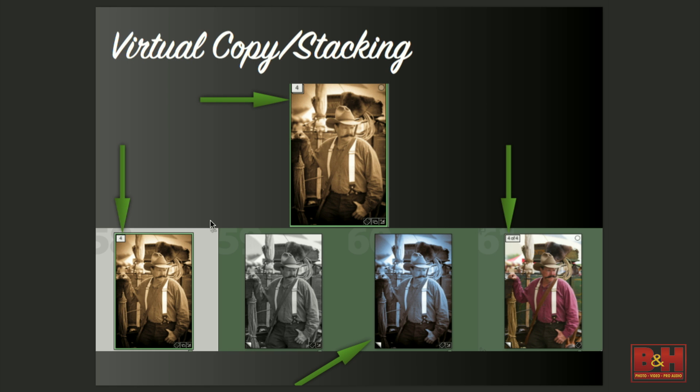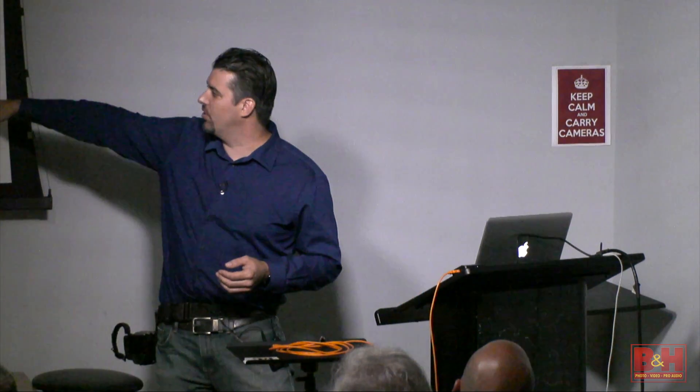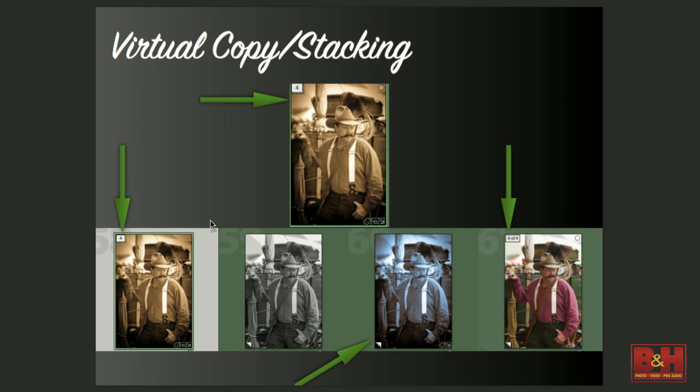In Lightroom, I can actually do virtual copies — they all point back to a single raw file. So all of these variations you see here are one raw file. The way I can tell is the lower left corner is folded up — those are virtual copies. So as I made it a sepia tone, black and white, a blue tone, the regular color version, they're all pointing back to one. If you start with black and white and make a copy, you're going to have to reset the copy to get back to your color. My color one is my last one — normally I'll do the virtual copy first, but if you reset the virtual copy, it's not the end of the world.